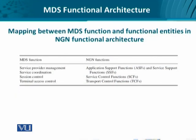We can look at the functional requirements that emerge from MDS and translate them into the functional support available in NGN. On the MDS side we have service provider management for the third party, service coordination between the user, third party, and NGN operator, session and service control covering when to start or end a service, and terminal access for network attachment. All of these map to NGN functions: the application support function, service support function, service control function, and transport control function.